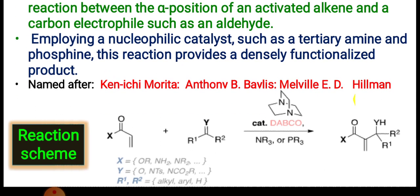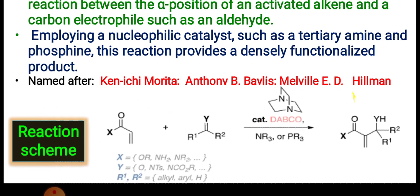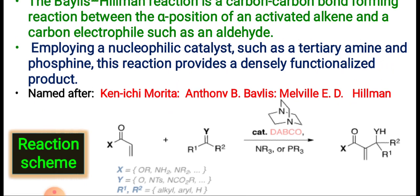Now we will see the reaction scheme. The first reactant is a conjugated olefin molecule — the activated alkene. The second is your aldehyde or ketone. In the presence of DABCO as a catalyst — a bicyclic diamine — and tertiary amine (PPR3 or NR3), you get the product. In the product, your activated alkene is retained, but reduction of the carbonyl compound takes place, and a bond forms between the alpha position of the activated olefin and the carbonyl carbon of the aldehyde or ketone.